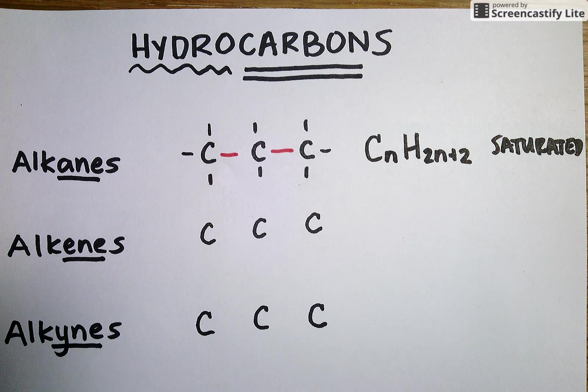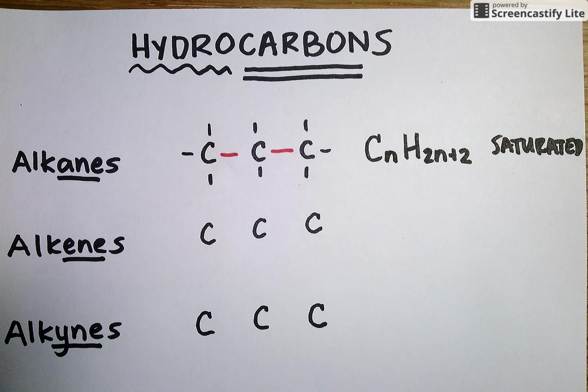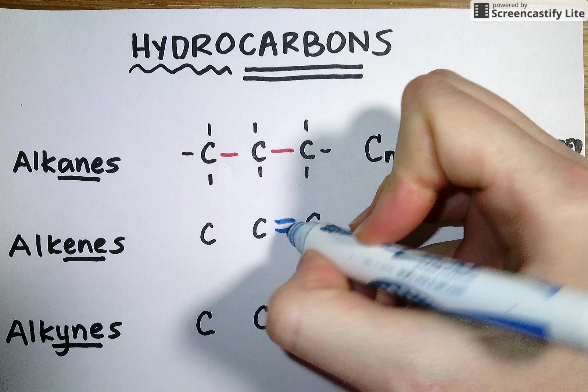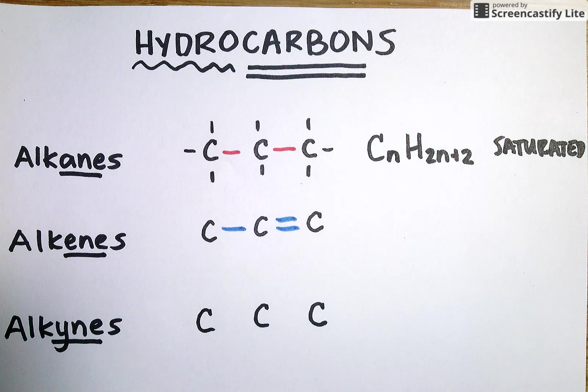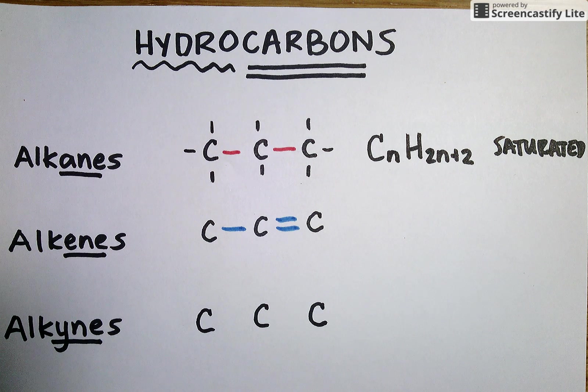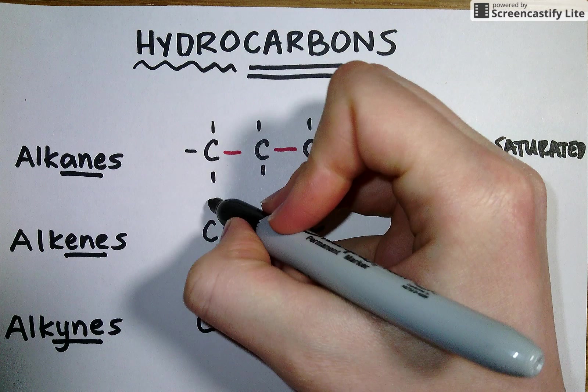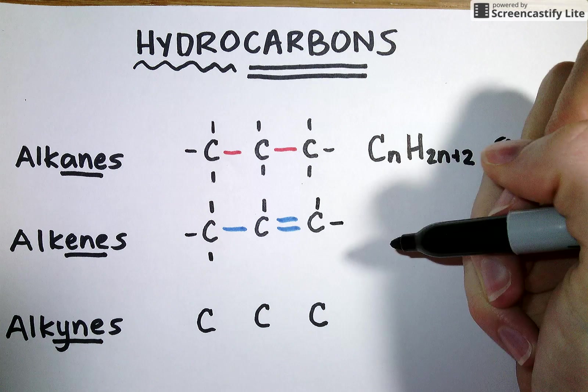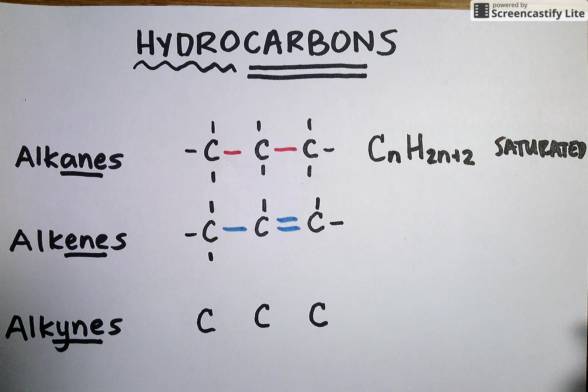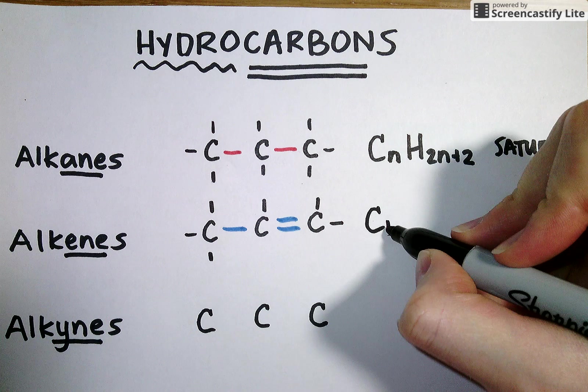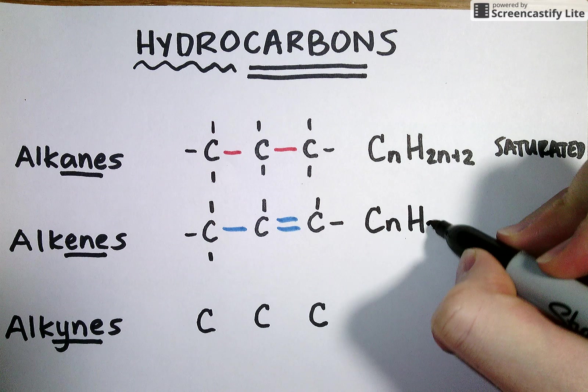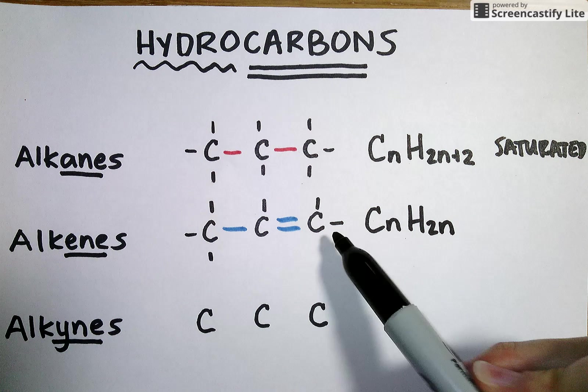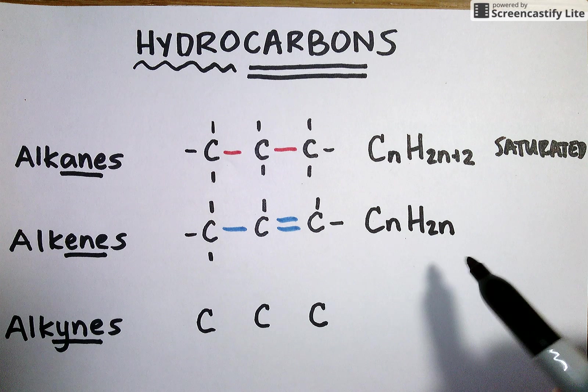Our second class of hydrocarbon is the alkene and alkene is defined by having one double bond between its carbon atoms. So when we go through and fill in the remaining hydrogens such that every carbon has four bonds, what we find is that carbon and hydrogen are now in a ratio of 1 to 2. So in this molecule we have 3 carbons and 2 times 3, 6 hydrogens.